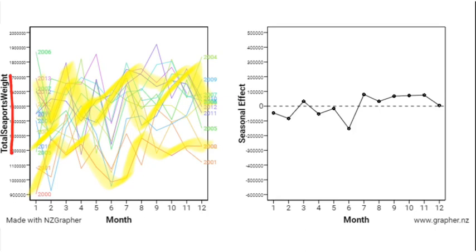And we can see that in the second graph too. We've got our trend line there at zero, and we can see that this data here doesn't really vary much from that trend. It only goes up and down a little bit. There are one or two places where it does obviously go a little bit further down, but overall there really is not much of a consistent pattern here.